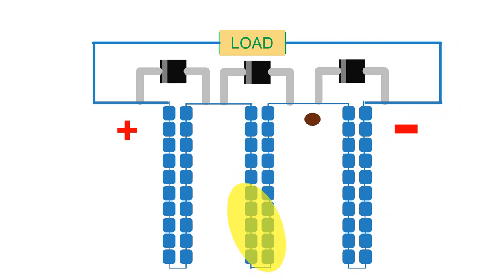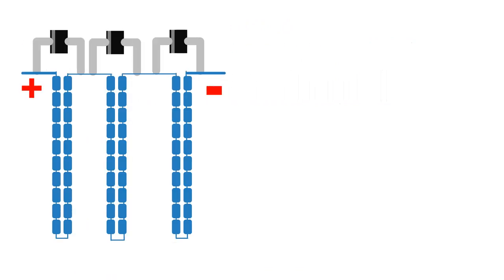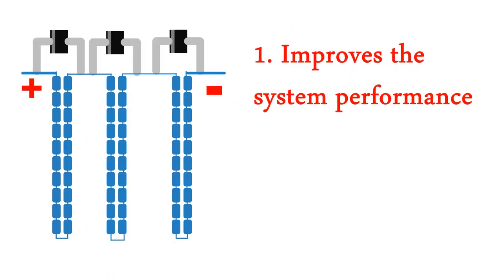Let me conclude this. Bypass diodes are used in a solar panel for two reasons. First, to improve the overall system performance of the module by reducing losses. Second, to provide a greater amount of product safety by avoiding the chances of formation of local hotspots.